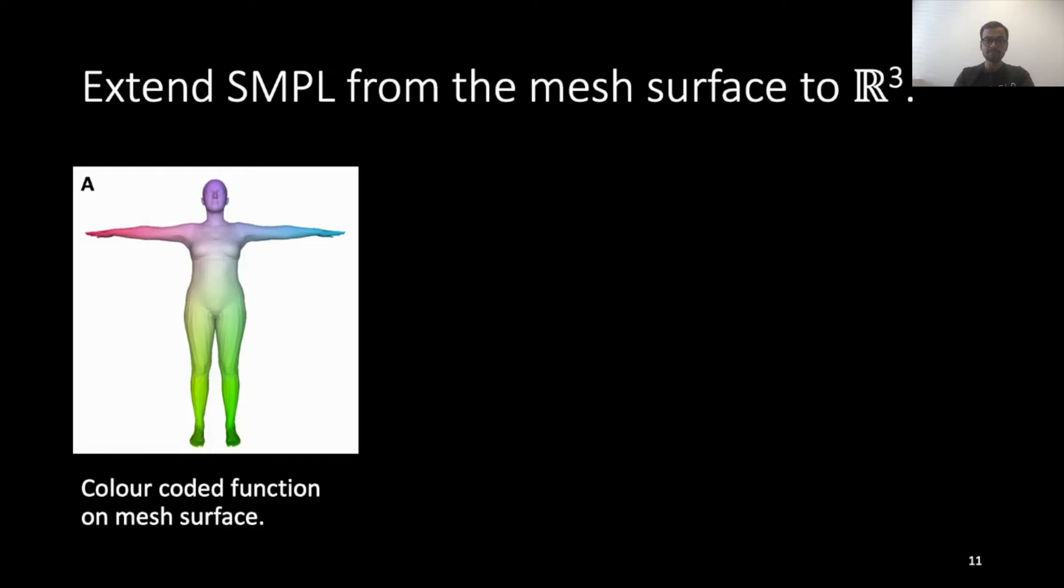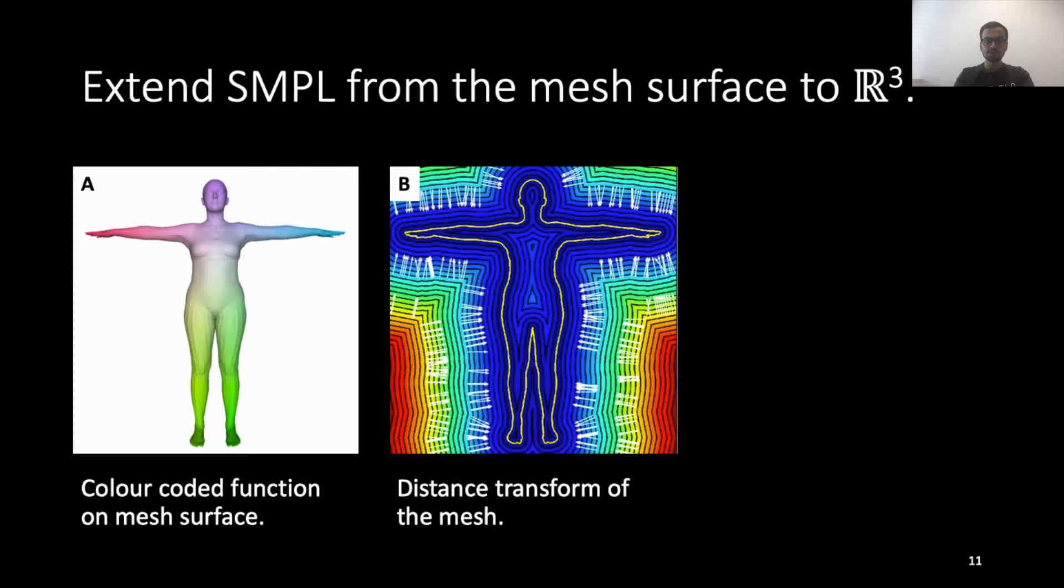We can apply the same principle to diffuse the body model function from the surface to R³. Let figure A represent an arbitrary, smooth and continuous function defined on the model surface represented as per-vertex colors. We can compute the distance transform of this model and use it to diffuse the model function to entire R³.